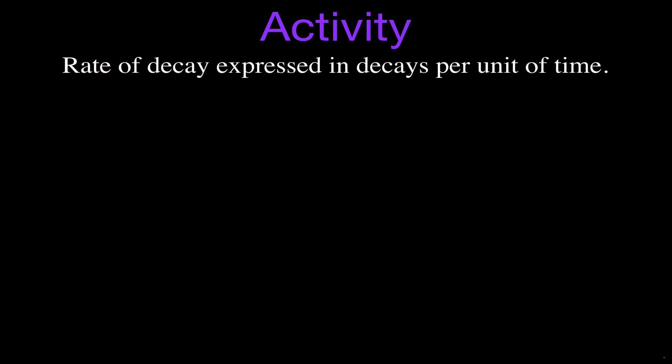What is activity as it relates to radioactive decay? It is simply the rate of decay of a radioactive sample, expressed in the number of decays of that radioactive sample per unit of time, that unit of time being the second. So we can simply write down that it's the number of decays that occur per second.